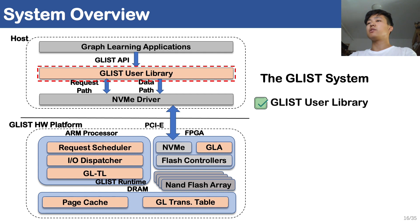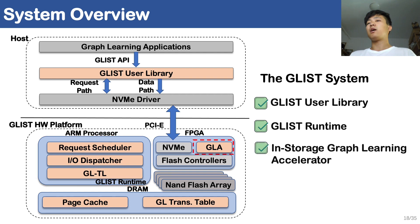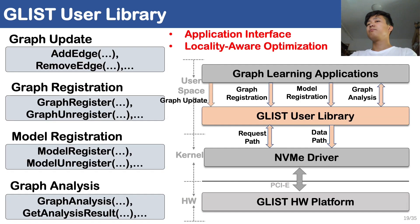GLIST contains components at both the host side and the device side. At the host side, the user application calls the GLIST API offered by the GLIST user library to manipulate the GLIST system. The calls will further be dispatched to the device side via request pass or data pass. The device side is built upon a hardware platform containing an FPGA, an embedded processor, flash arrays, and DRAM. Moreover, the GLIST user library also performs locality-aware optimization to exploit spatial data locality. The GLIST runtime runs on the embedded processor and manages incoming user requests in a locality-aware manner to maximize temporal data locality. An in-storage graph learning accelerator is implemented in the FPGA of the device side to achieve high-performance graph learning.